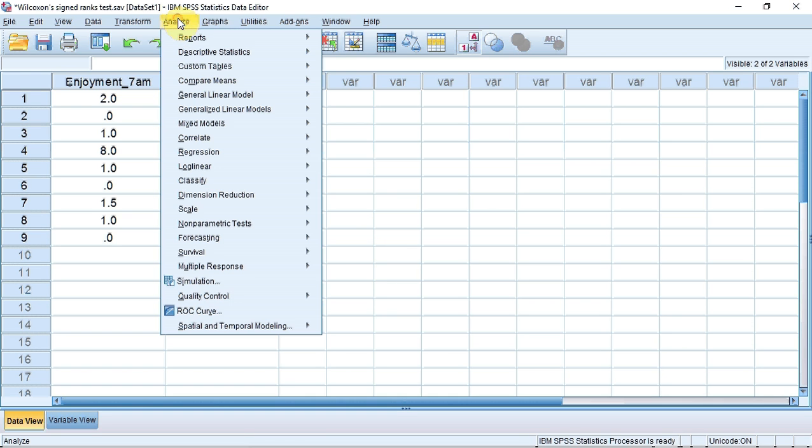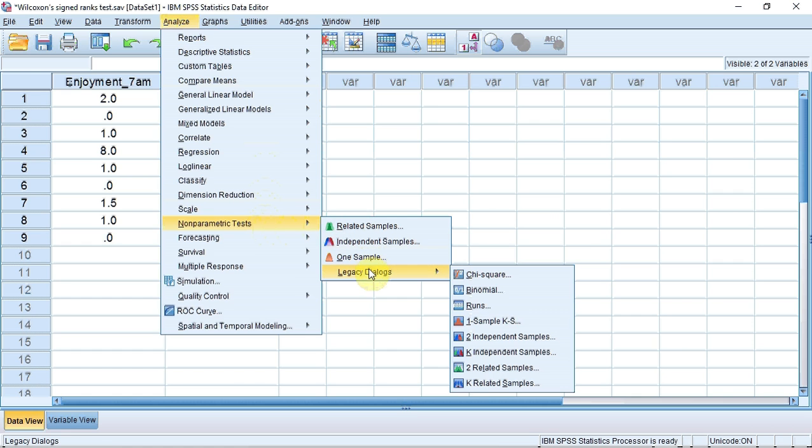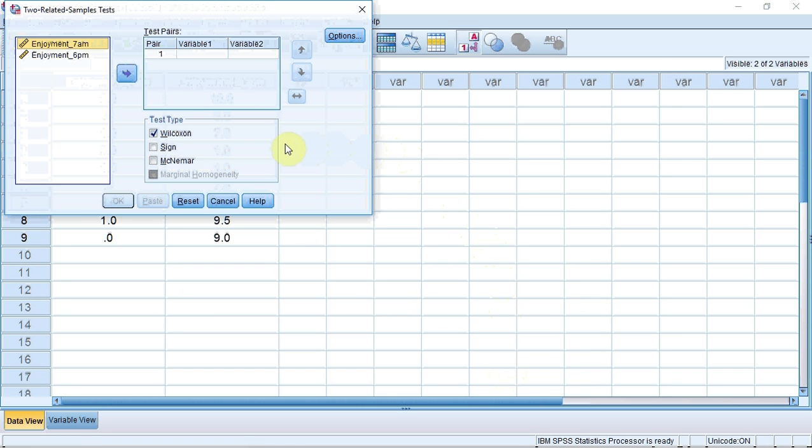Down to Non-Parametric Tests, a sub-menu appears, down to Legacy Docs, and then down to two related samples and click. You can see that the Wilcoxon test is already ticked.